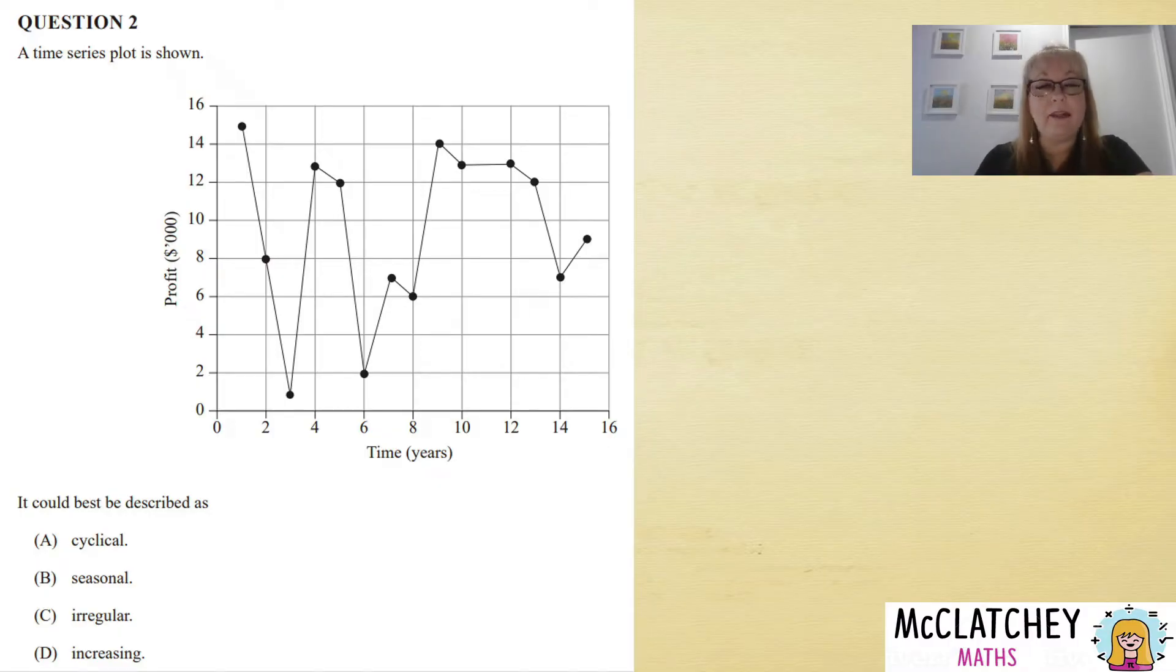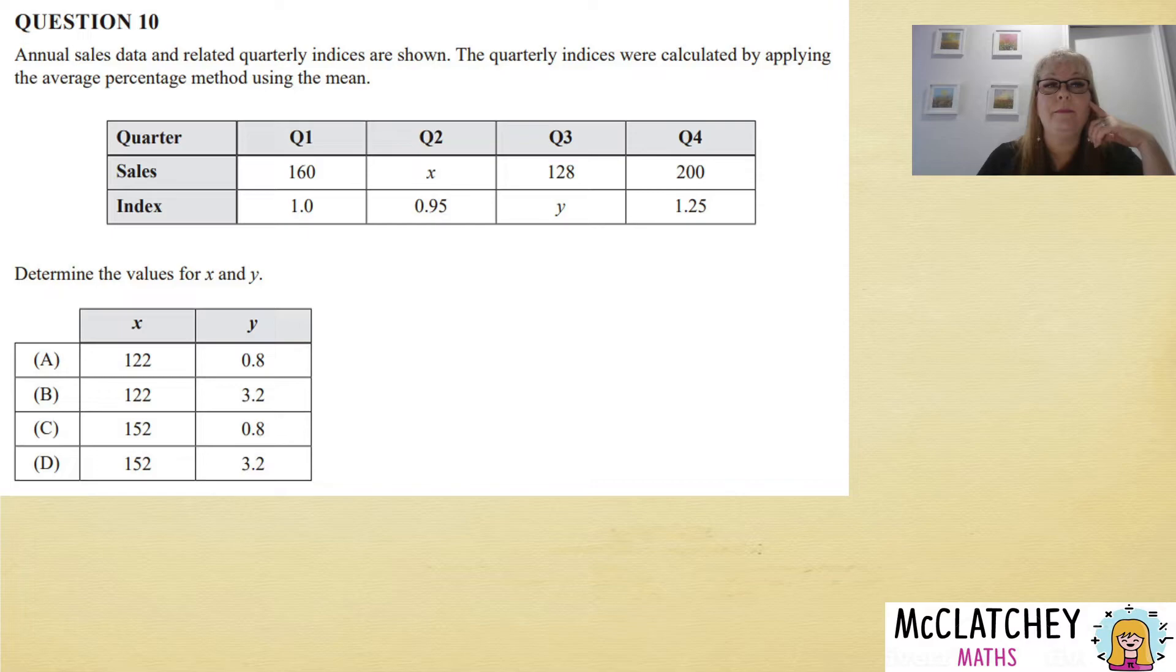It's also not an increasing pattern. As you can see over time, if I had to draw a line through the middle of this—which would be very difficult—there really isn't an increasing or decreasing pattern. I would say it's C, irregular. Okay, question 10: annual sales data and related quarterly indices are shown.